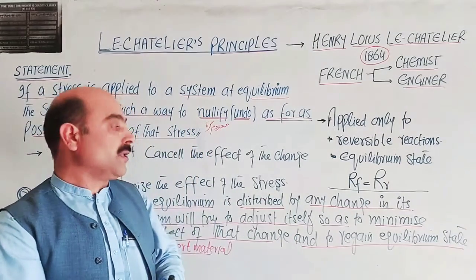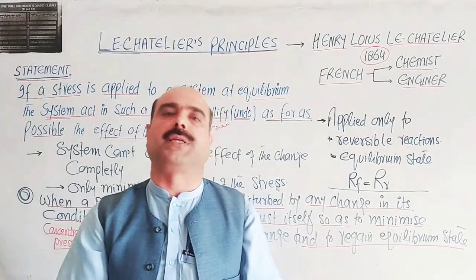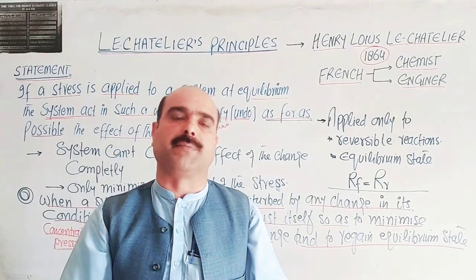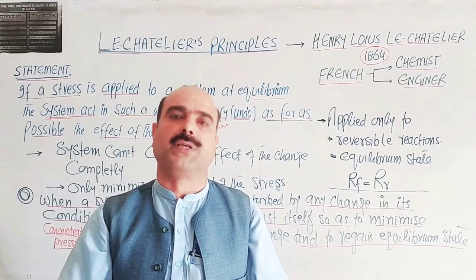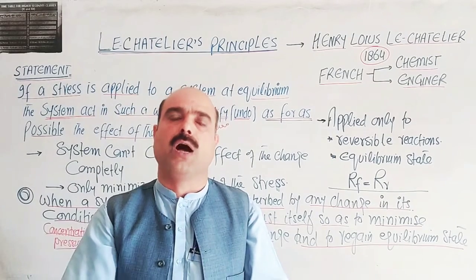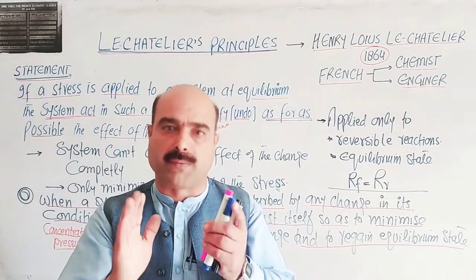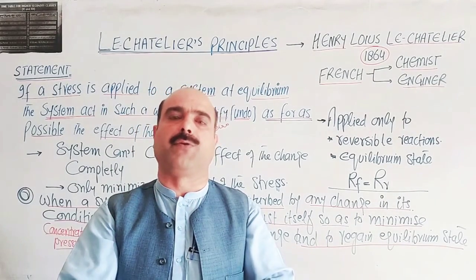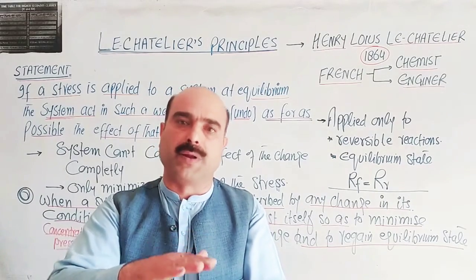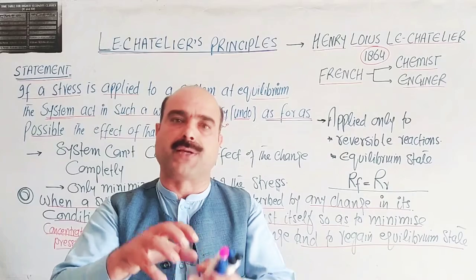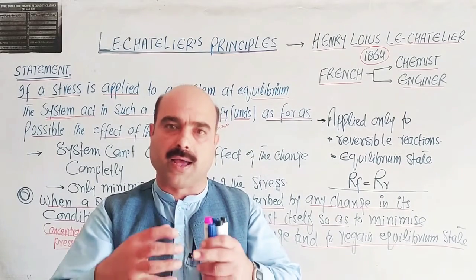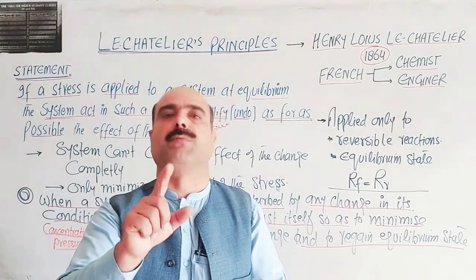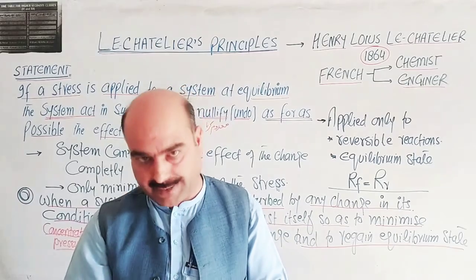The system in equilibrium is disturbed by changes such as: increase or decrease in concentration of reactants and products, increase or decrease in temperature, increase or decrease in pressure, or addition of catalysts. That disturbance is not permanent — the system will try to adjust itself as soon as possible.